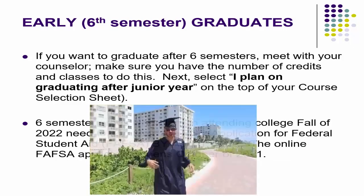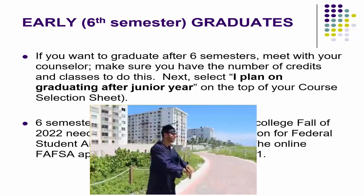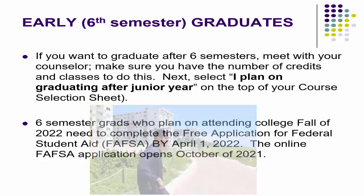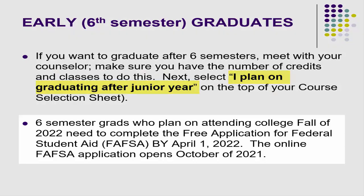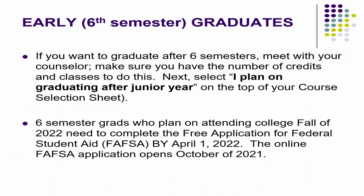If you want to graduate after your sixth semester, you need to meet with your counselor to make sure you have the number of credits and classes needed to graduate a year early. There's an option near the top of your course selection sheet that says 'I plan on graduating after junior year.' Additionally, sixth-semester grads planning to attend college that next fall need to complete their FAFSA by April 1st. It will become available in October and we will remind you, but make note of it.